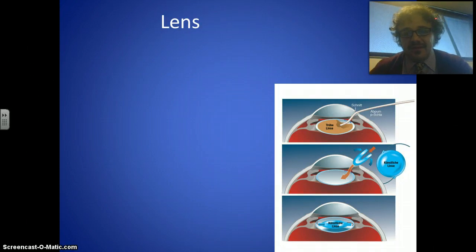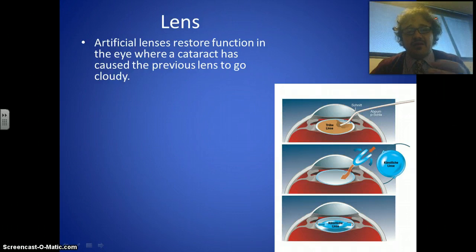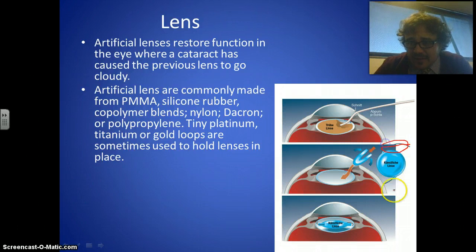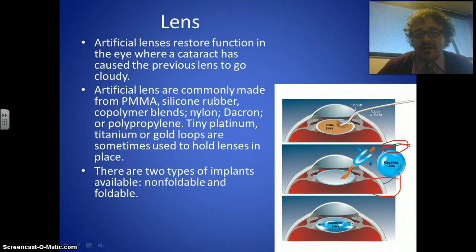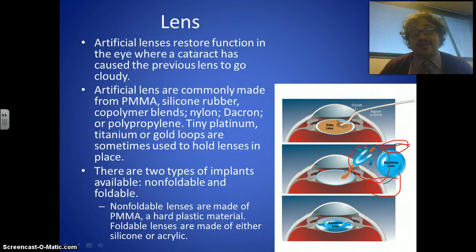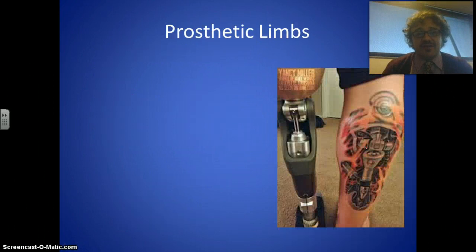Artificial lenses restore function to the eye when a cataract has caused the natural lens to go cloudy, blocking light from passing through. They're commonly made of PMMA, silicone rubber, or copolymer blends — including nylon, Dacron, and polypropylene. You can see the little loops that hold the lens in place. There are two types: non-foldable, which are PMMA hard plastic, and foldable ones made of silicone or acrylic. Foldable lenses are cut, folded in half, slid through a small incision, and then pop open inside.